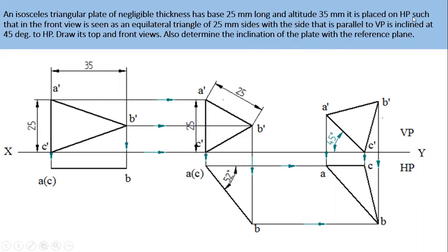It is placed on HP such that in the front view is seen as an equilateral triangular lamina. So it says that it is placed in HP but you have to see that in the front view it is visible as an equilateral triangular lamina. So they have given the inclination with respect to HP in this problem. See here it is placed on HP.